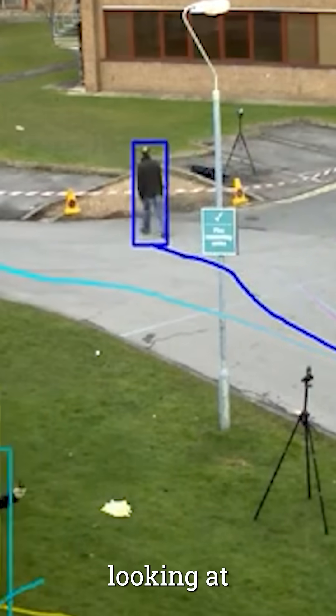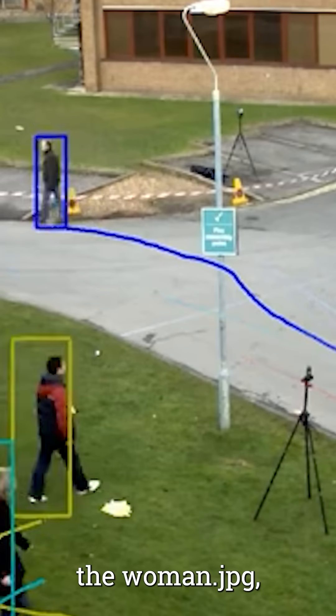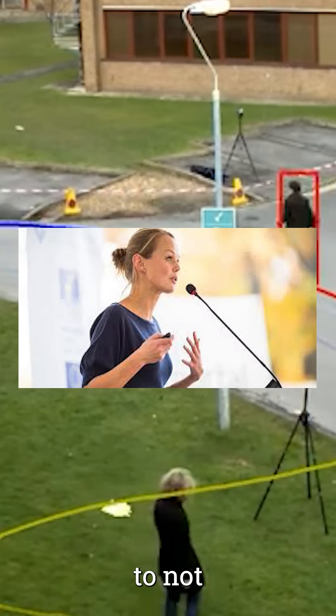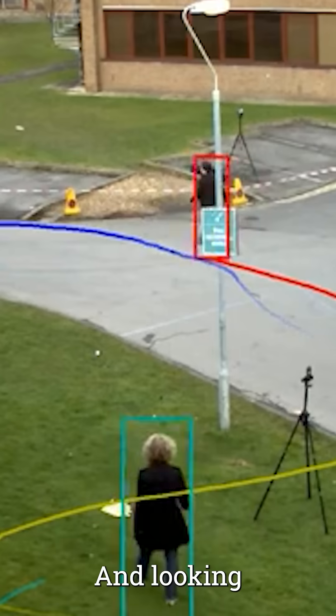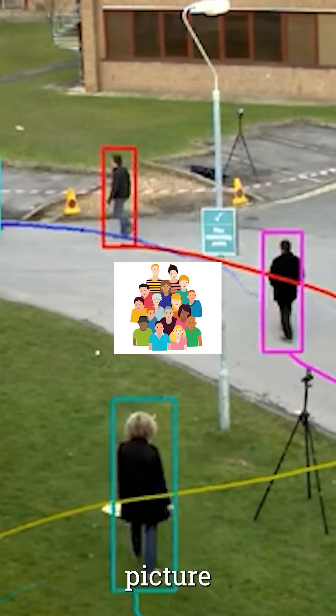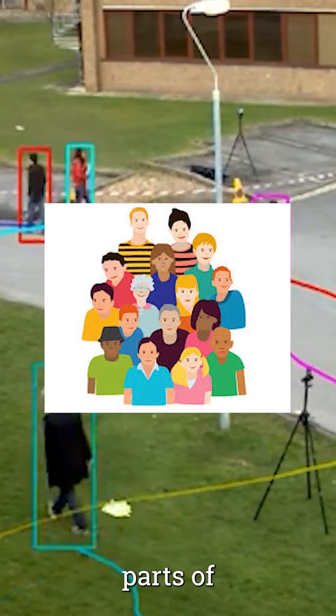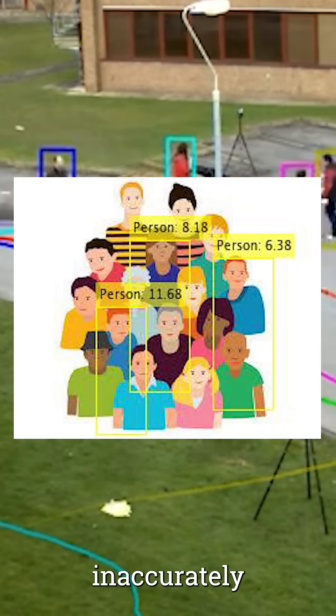So looking at this picture, it's not a full picture, so we expect the algorithm to not detect it. And looking at this group picture where there are also just partial bodies, it will be inaccurately detected.